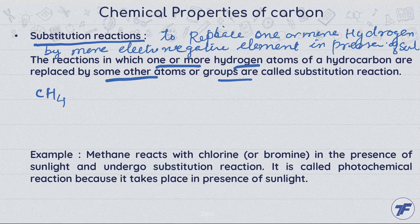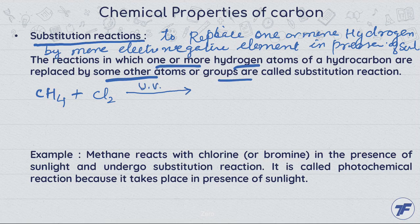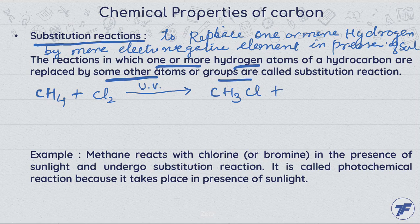Methane. When methane is treated with chlorine in presence of sunlight radiations, one hydrogen atom of methane is replaced and a chlorine atom is added. We form chloromethane and HCl gas is evolved.